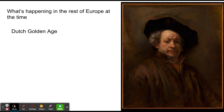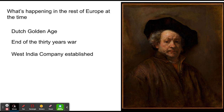What was happening in the rest of Europe at this time: we are in the middle of the Dutch Golden Age, the Thirty Years' War has recently ended, and the West India Company has been established, which in the future will lead to massive revolutions within trade. That's it.